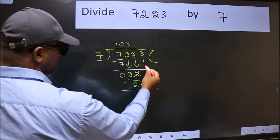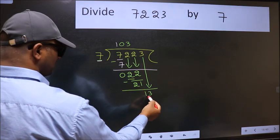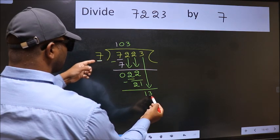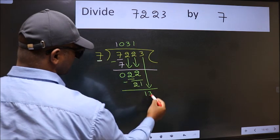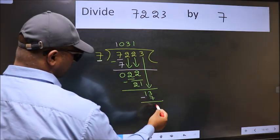After this, bring down the beside number. So 3 down. So 13. A number close to 13 in 7 table is 7 once 7. Now we subtract. We get 6.